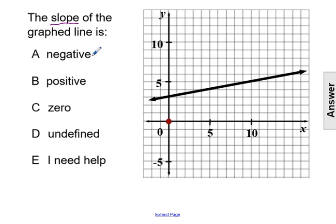The first choice of negative means that the line would be falling from left to right. The second choice of positive means that the line would be rising from left to right.